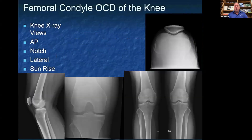The second location for OCDs in the body that we see is the femoral condyle OCD in the knee joint. On the knee, we typically get four views: an AP view, a notch or tunnel view, a lateral view, and a sunrise view. You want to get these weight-bearing as well because it provides additional information. Your sunrise view is in the top right, lateral view is in the bottom left, to the right of the lateral view is the tunnel view, and in the far bottom right you can see an AP view where we see both knee joints at the same time.